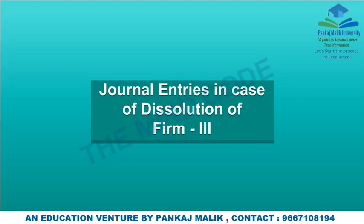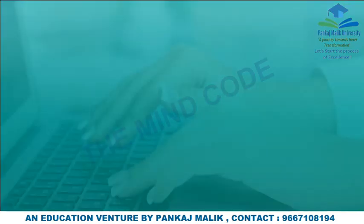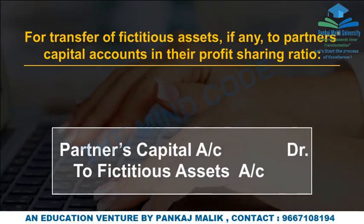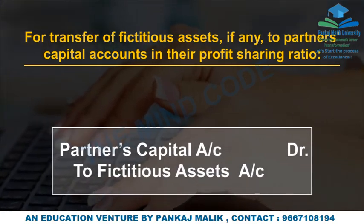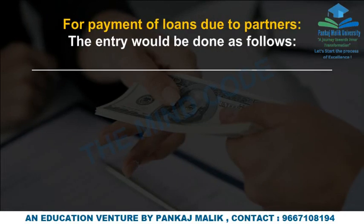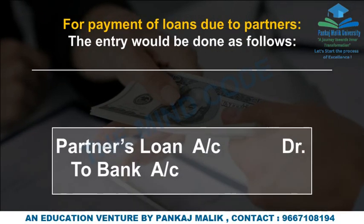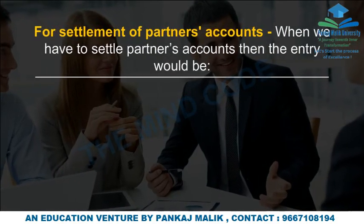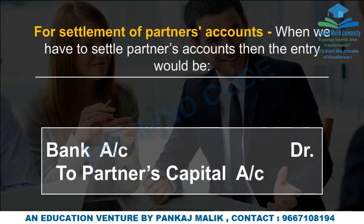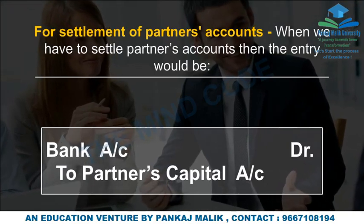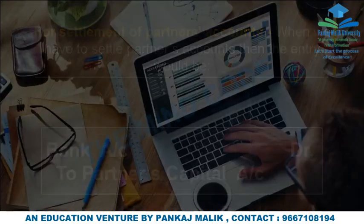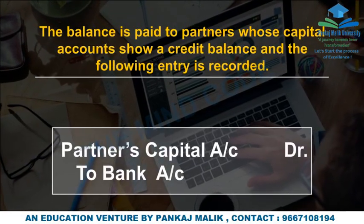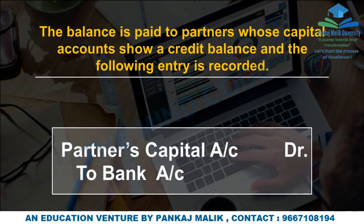For transfer of fictitious assets, if any, they are transferred to partners' capital accounts in their profit-sharing ratio. For payment of loans due to partners, the entry is recorded to close the partner's loan account. For settlement of partners' accounts, when settling partners' accounts, the entry is made accordingly. The balance is paid to partners whose capital accounts show a credit balance, and the corresponding entry is recorded.